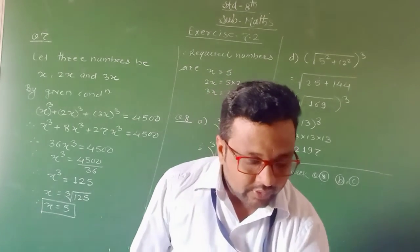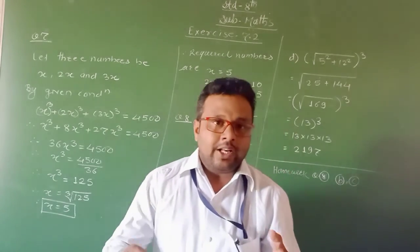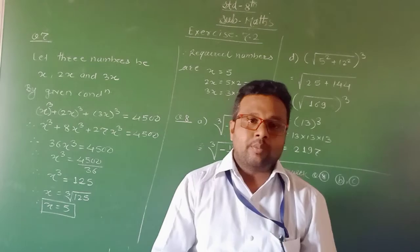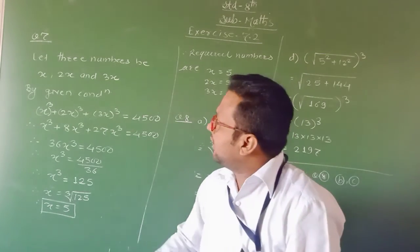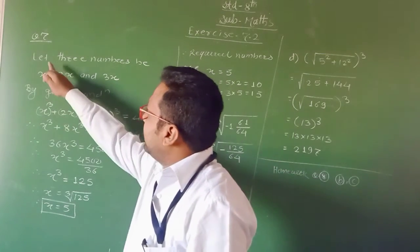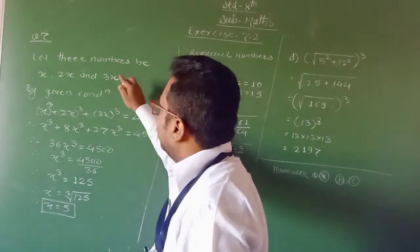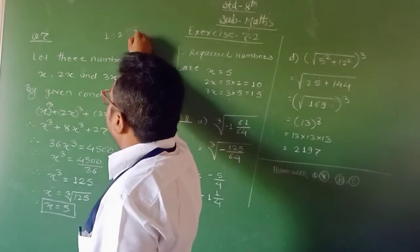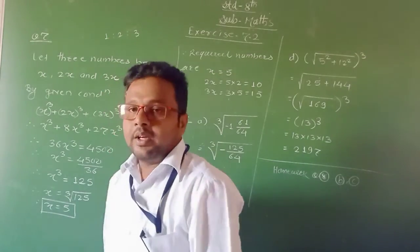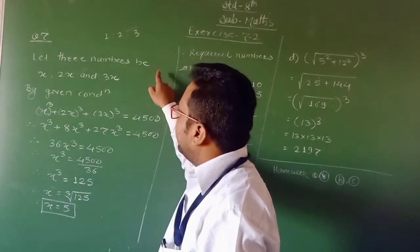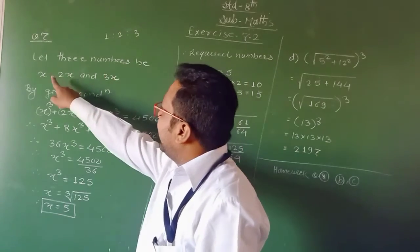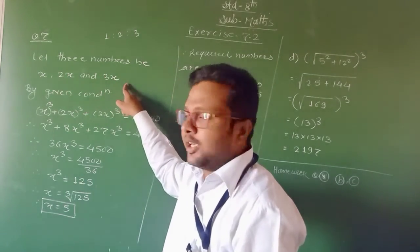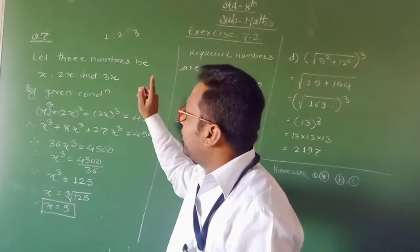For that, we know that if any quantity is given in ratio, we take the common multiple with that. Therefore, let the 3 numbers be given in the ratio 1 is to 2 is to 3. Therefore, the required numbers be x, 2x, and 3x. Here we consider the variable.